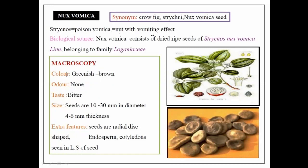It also has an emetic sensation. Regarding biological source: Nux vomica consists of dried ripe seeds of Strychnos nux-vomica Linn., belonging to family Loganiaceae. Strychnos nux-vomica Linn., Loganiaceae — this much you have to remember.